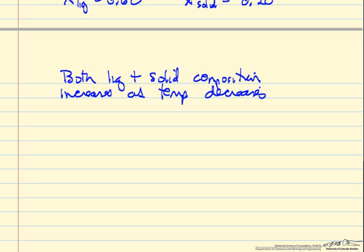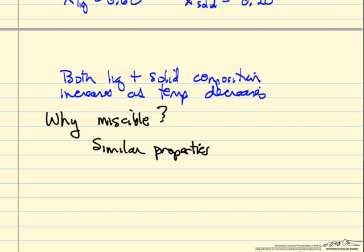The question we might want to ask is why are these two materials miscible? A lot of it has to do with them having really similar properties. If we look up the crystal structure, rhombohedral crystal structure, they have the same crystal structure.